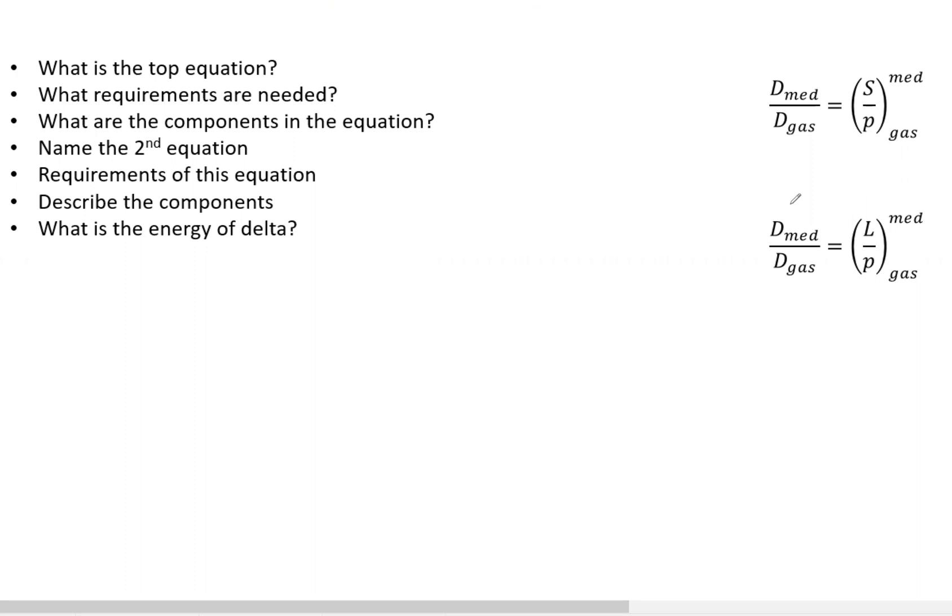Then name the second equation down here, what are the requirements and components of it, and what is the energy of delta. So first thing, you need to know that this is the Bragg-Gray theory.